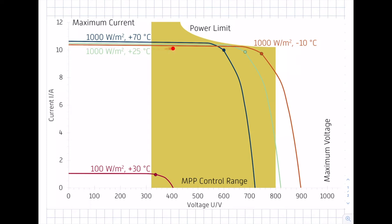The orange curve represents a clear sky day in winter: 1000 watts per square meter at noon, but a module temperature of minus 10 degrees Celsius. In this case, smaller module temperatures lead to an increase in voltage, represented by the shift of the orange curve to the right. The MPP point also moves to the right, meaning the maximum power point voltage has increased, but it must still remain within the MPP control range.